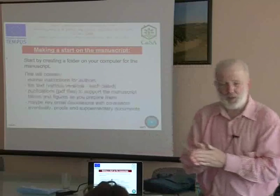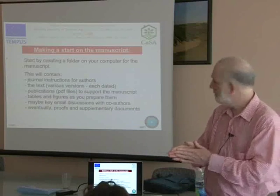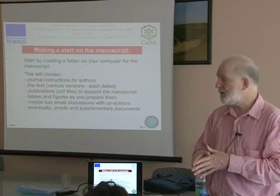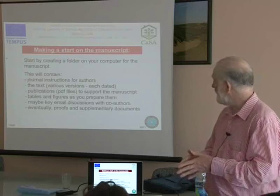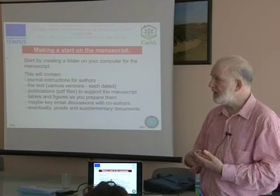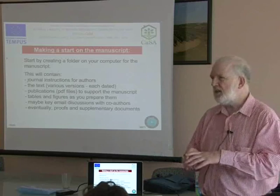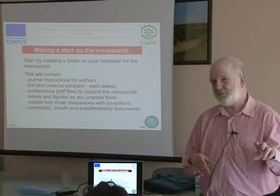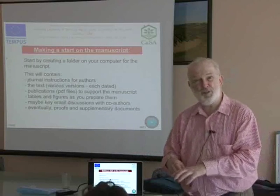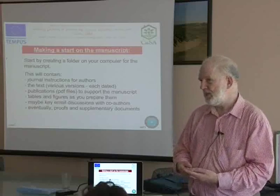Let's make a start on doing something with your manuscript. Start by creating a folder on your laptop where you can put things — the instructions for authors for the journal. As you start typing the text, it's useful to keep saving it with a new date, because sometimes I find that I type something and then decide I don't like it, so I cut it out. If you haven't saved it with all the text there, you can't go back and decide maybe it would be useful to put somewhere else, because you've overwritten the file with your latest version.